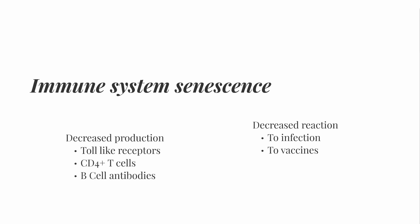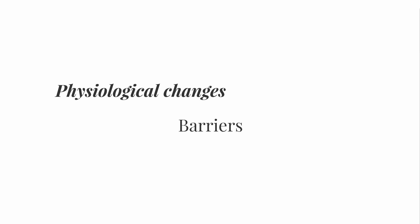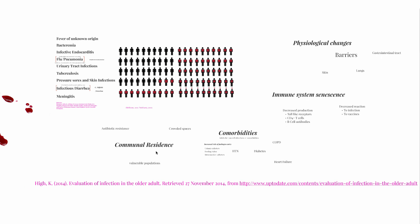Last but not least, we have physiological changes to the barriers of the body — namely the skin, lungs, and GI tract — each of which undergo a variety of changes at the tissue level that make it easier for infectious pathogens to enter, proliferate, and bypass our immune defenses. So remember: communal living, comorbidities, immune system senescence, and physiological changes. These are the core characteristics that make the older population more vulnerable to infection.